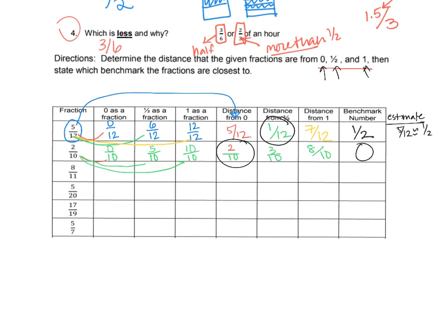For a fraction out of 11ths — not a familiar denominator — zero is 0/11, one is 11/11, but halfway would be 5.5/11, which we don't normally write that way. Looking at 8/11: the distance from zero is 8/11, from the midpoint 5.5 is 2.5/11, and from one is 3/11. So 8/11 is closest to one-half as its benchmark.